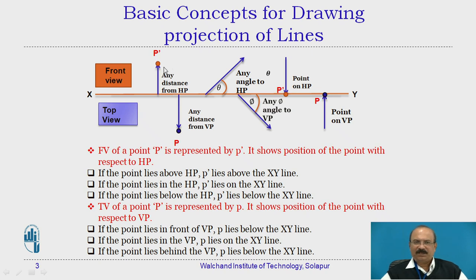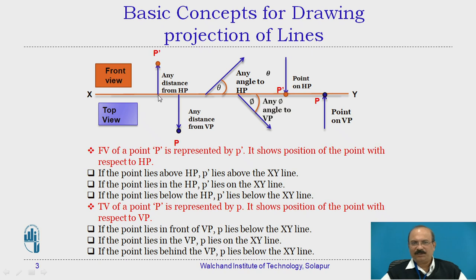Any point represented above the XY line is the front view. Suppose this is a point P' — representing P as a point situated in the first quadrant, you represent it as P'. Any distance from the XY line indicates the distance from the horizontal reference plane. All measurements are made from the XY line in the upward direction — 30 mm, 40 mm, 60 mm — measured upward from the XY line. If a point is situated at 40 mm, that distance is measured from this reference line.